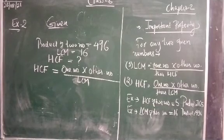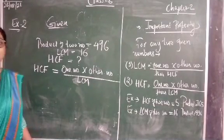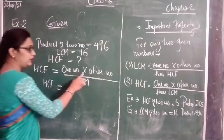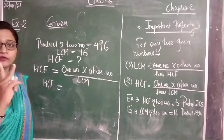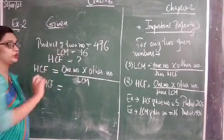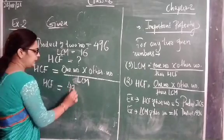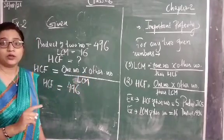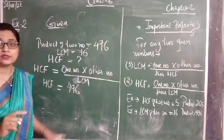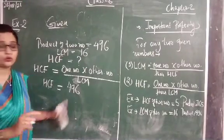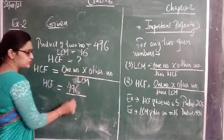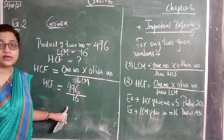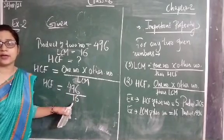First we have written the formula; now we just have to put the values in place. HCF equals one number into other number, which means the product of two numbers. The product of two numbers is given in the question — that is 496. Upon LCM, which is already given, that is 16. So here, for finding HCF, we just have to divide 496 by 16.